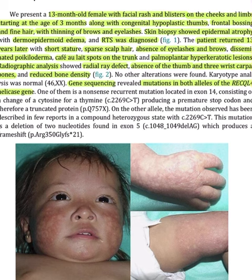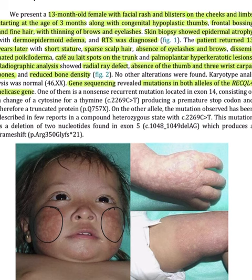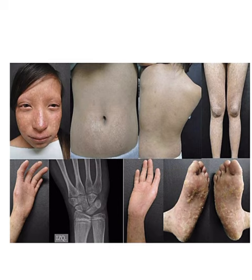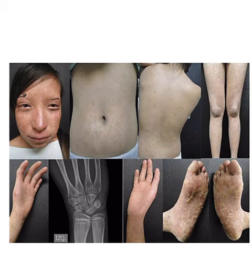As you can see here, the child is having an erythematous rash over the cheeks extending over the nose as well as the chin, and a rash over the dorsum of hands and legs. Here we are able to appreciate frontal bossing, loss of eyebrows, loss of eyelashes, and a poikilodermatous rash over the face as well as the abdomen.